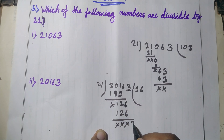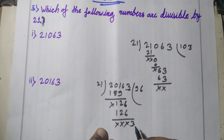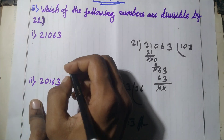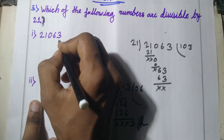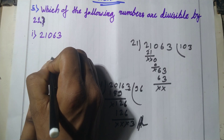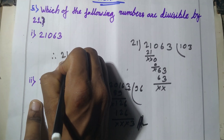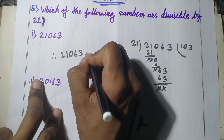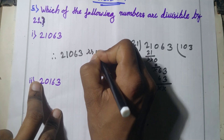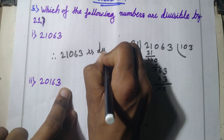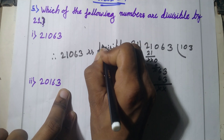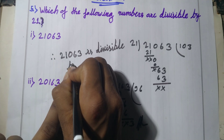126 divided by 21 gives remainder 0. Bringing down 3: the remainder is 3. This is not an exact division. Therefore, option 1, the number 21063, is exactly divisible by 21.